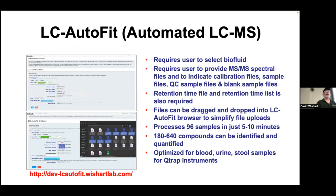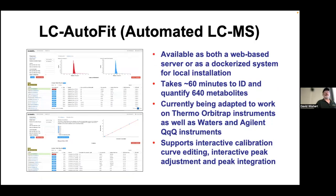The software has been developed here—you choose the biofluid, choose the files, get the retention time list, and drag and drop. Processing can be done quite quickly; currently it takes a couple of hours for about 640 compounds per sample, but ideally that should shrink to a couple of minutes. You'll work with a smaller sample set so it should take much less time. It allows interactive calibration curve editing, peak adjustment, and peak integration. Just like the others, a list of concentrations is produced in table format and you can view the spectra. In summary, targeted quantitative metabolomics is actually much easier and faster than untargeted, can be done on all major platforms, and has different workflows and software across platforms.